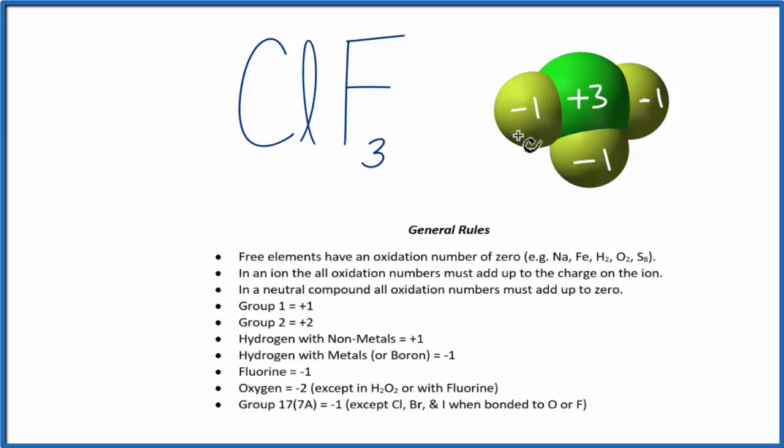To recap, we found the oxidation numbers on the ones we knew, the fluorines here, and we used those with the fact that in a neutral compound, and this is neutral because there's no plus or minus charge, all the oxidation numbers add up to zero. And all these numbers add up to zero. This is Dr. B with the oxidation numbers for ClF3, and thanks for watching.